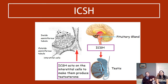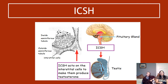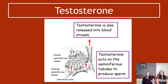ICSH is also produced in the pituitary gland and travels through the blood to the testes. There, it binds to receptors on the outside of interstitial cells, which causes those interstitial cells to produce testosterone. This is an important job, even though it's not directly related to sperm production itself. The interstitial cells are located on the outside of the seminiferous tubules.